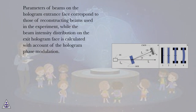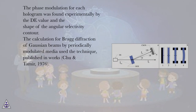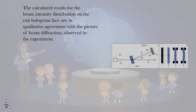Parameters of beams on the hologram entrance face correspond to those of reconstructing beams used in the experiment, while the beam intensity distribution on the exit hologram face is calculated accounting for the hologram phase modulation. The phase modulation for each hologram was found experimentally by the value and shape of the angular selectivity contour. The calculation for Bragg diffraction of Gaussian beams by periodically modulated media used the technique published by Chew and Tamir, 1976. The calculated results for the beam intensity distribution on the exit hologram face are in qualitative agreement with the picture of beam diffraction observed in the experiment.